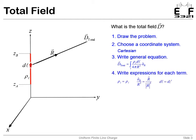Now we need to write expressions for each of the terms. Well, the charge density for length is just rho L. So rho L equals rho L. Our differential length is dz.